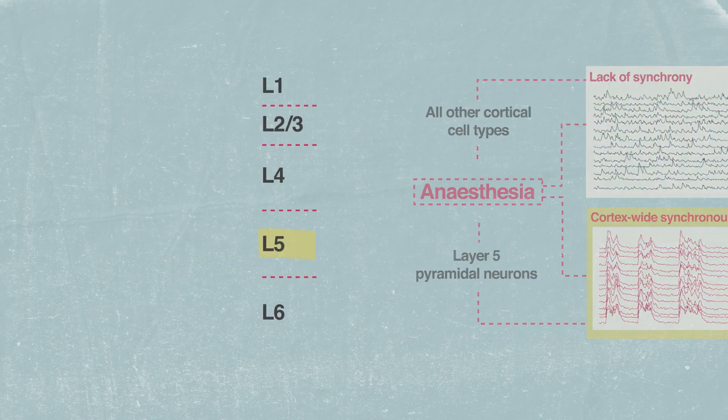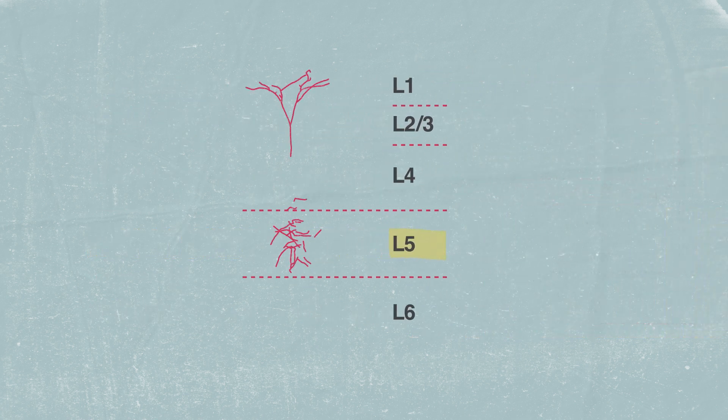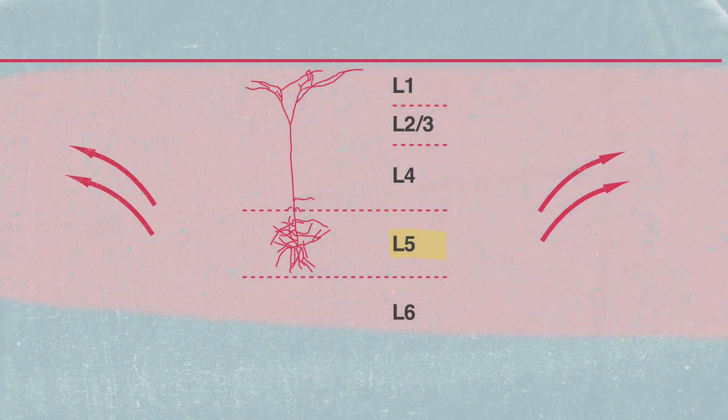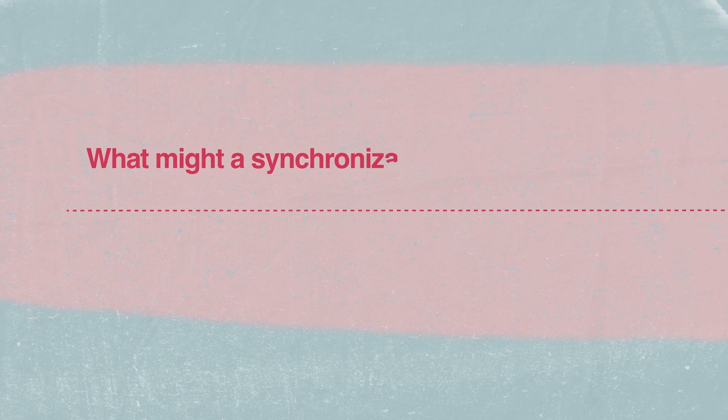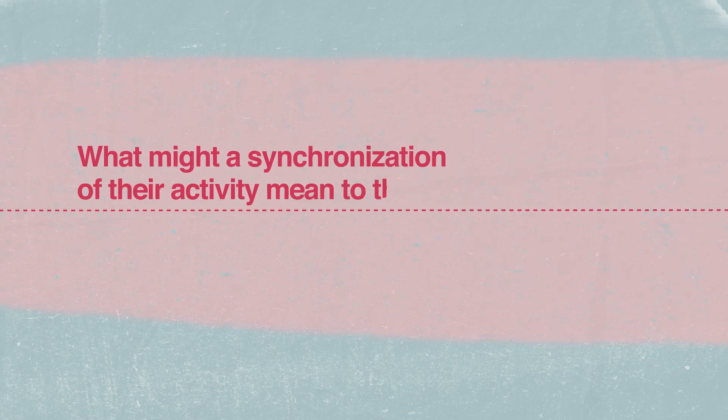Layer 5 pyramidal neurons serve as a major cortical output, both across cortex and to other brain areas. Given this, what might a synchronization of their activity mean to the brain?